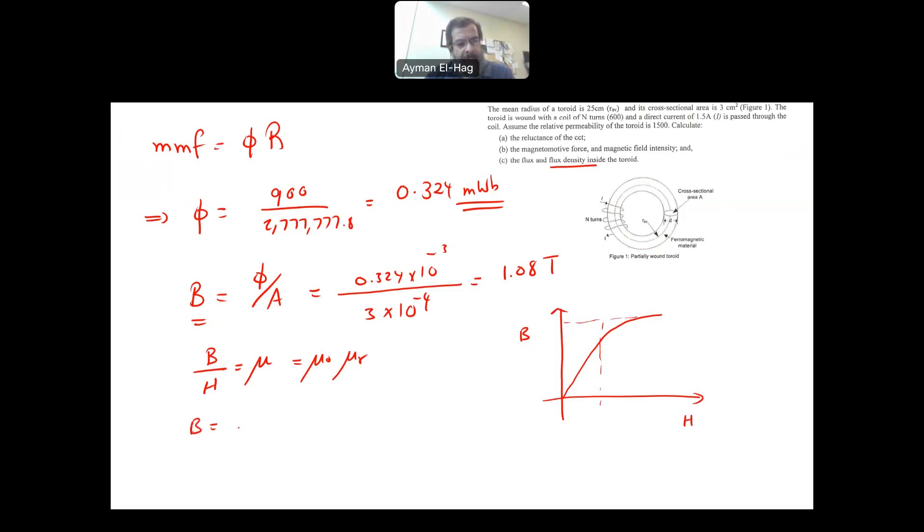Now, here B becomes equal to mu zero mu R times H, and we have everything. Mu zero is 4 pi times 10 to minus 7. Mu R is the 1500. Your H is equal to 573. And if you do that, this is equal to 1.08 Tesla, which is exactly the same as this value.